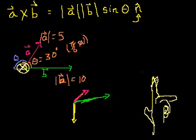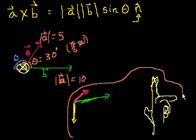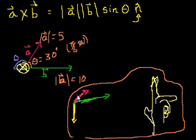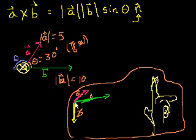So these things I have drawn here — this was A cross B. Using the right-hand rule when I did A cross B, we saw that the magnitude was 25, and the direction N pointed downwards, or when drawn in two dimensions, it pointed into the page. So let's see what happens with B cross A.